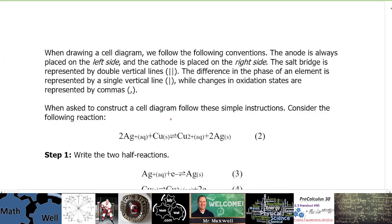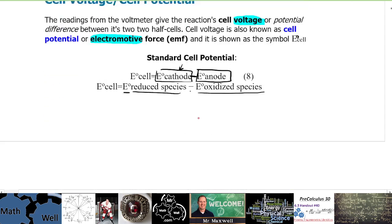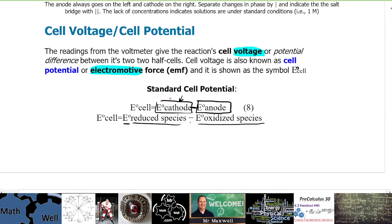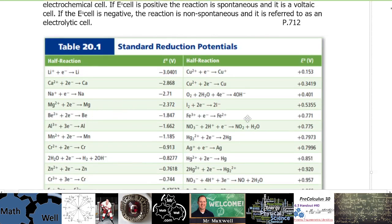The standard cell potential is the standard reduction potential from the chart that we're going to look at from the cathode minus the number or the voltage from the anode. So it's cathode minus anode, what's being reduced minus what's being oxidized.